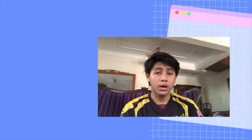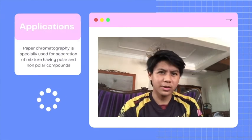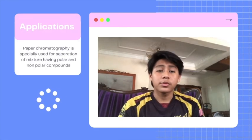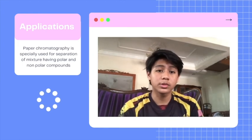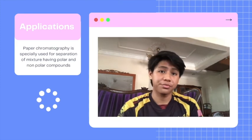Okay, so now we are talking about application of paper chromatography. Paper chromatography is specially used for separation of mixture having polar and non-polar compounds. It is also for separation of amino acids. It is used to determine organic compounds by chemical in urine.